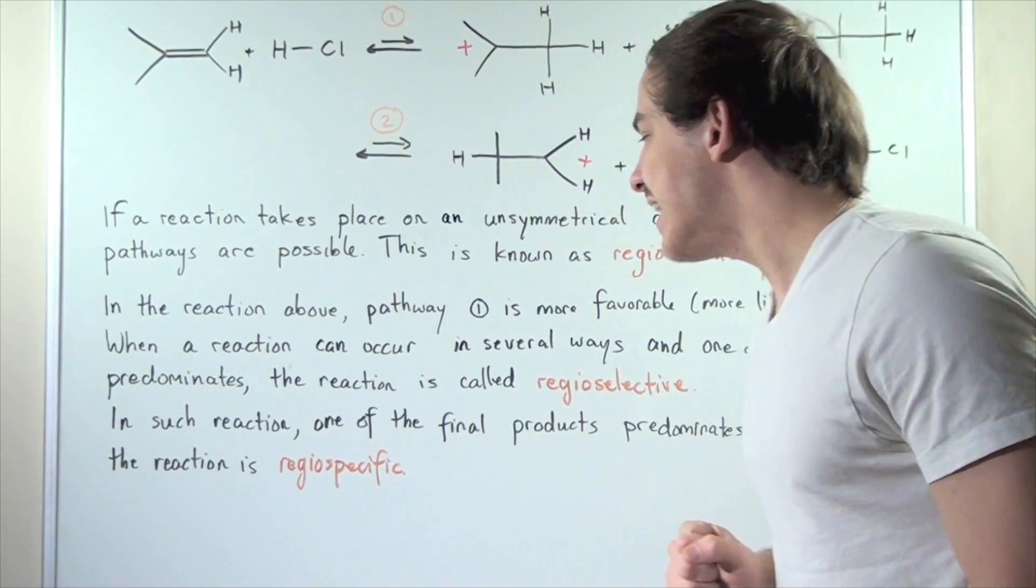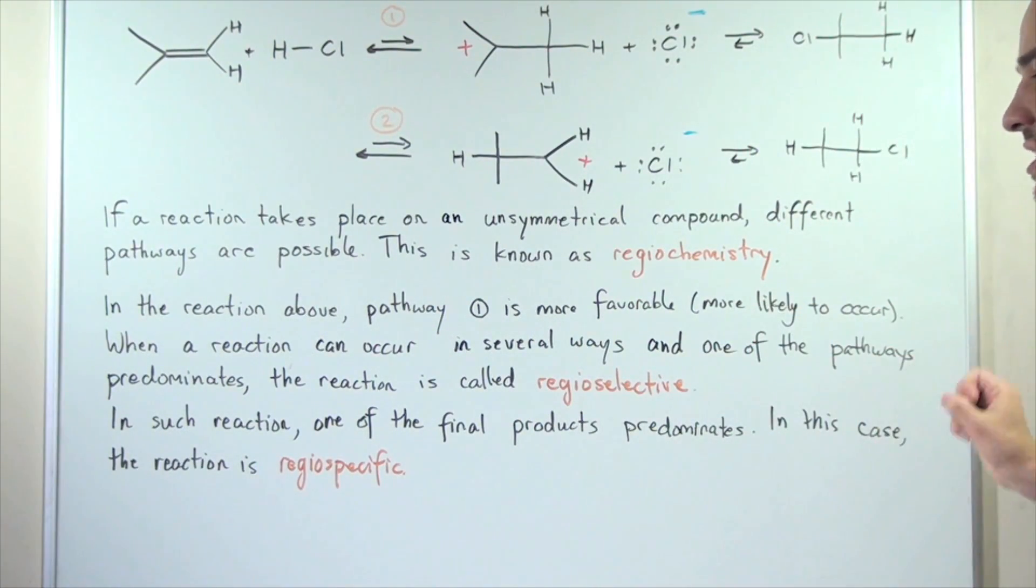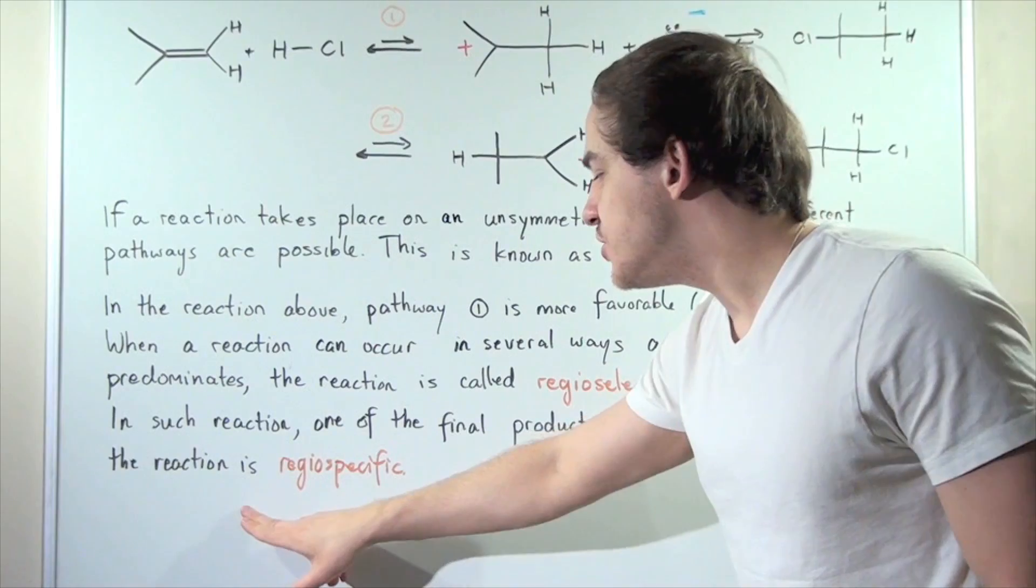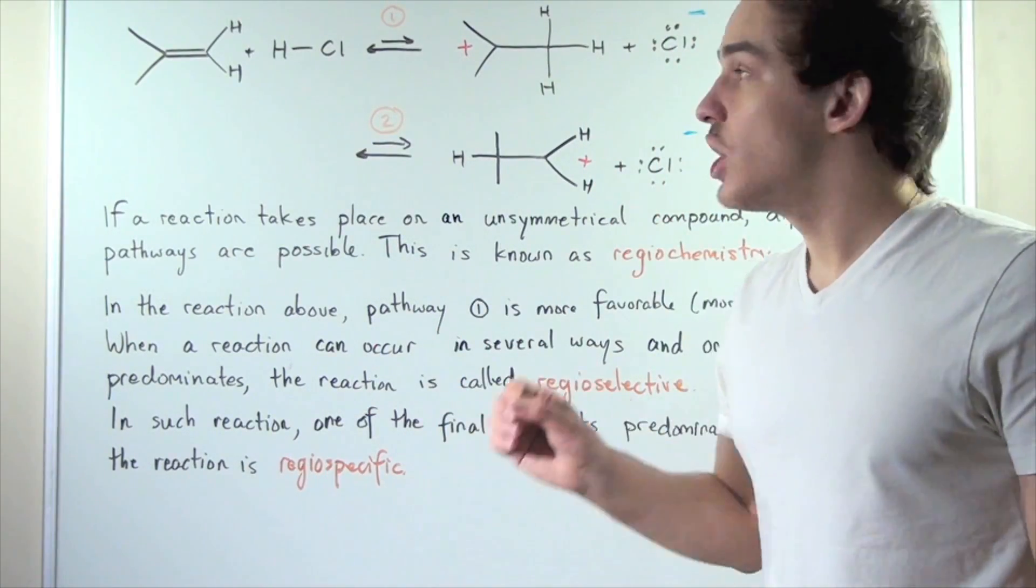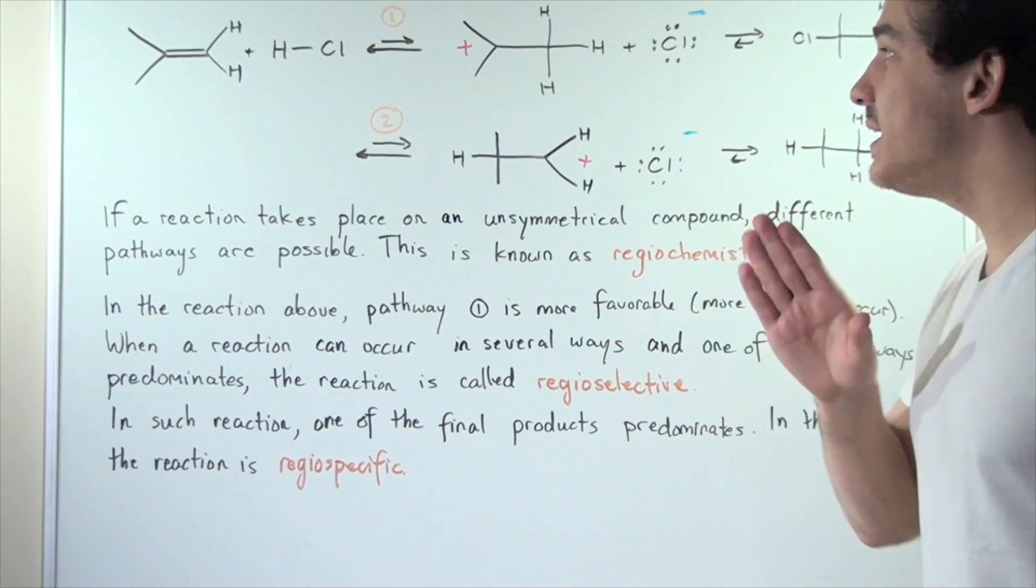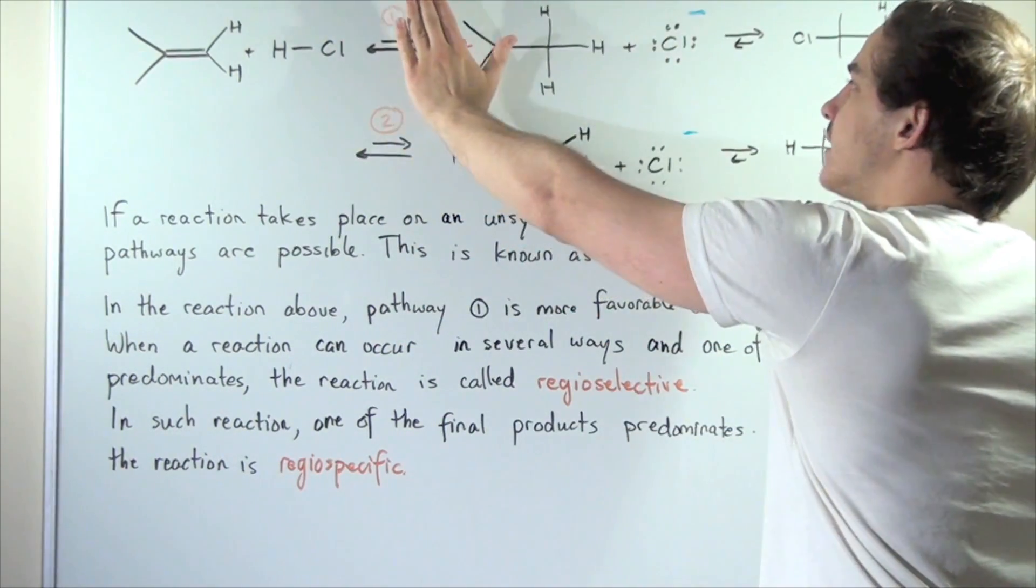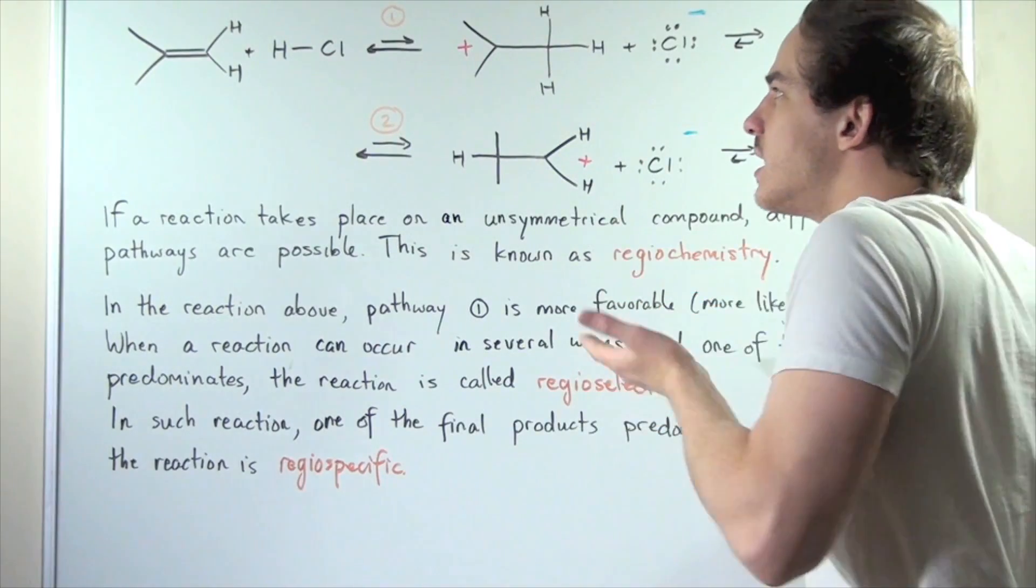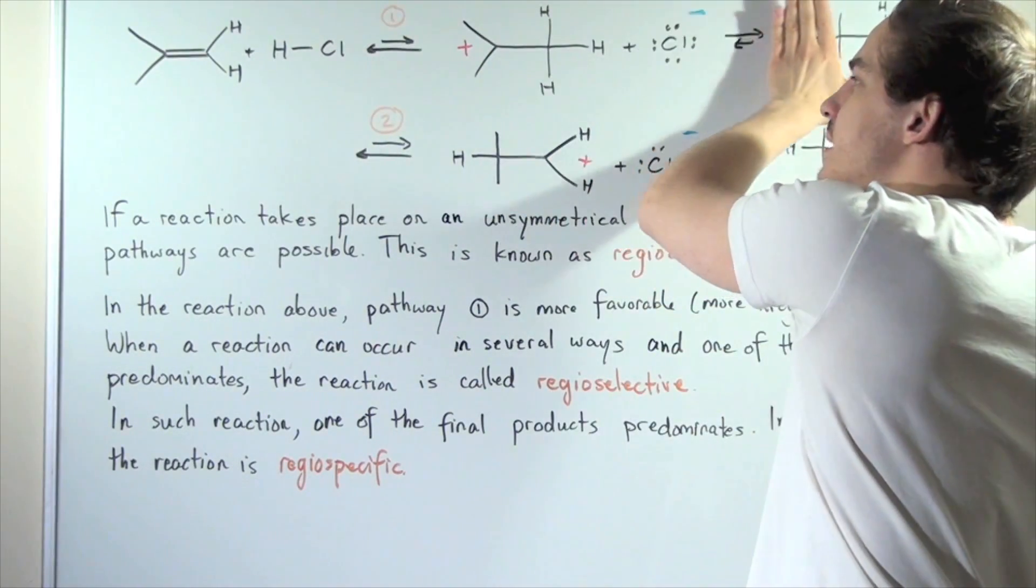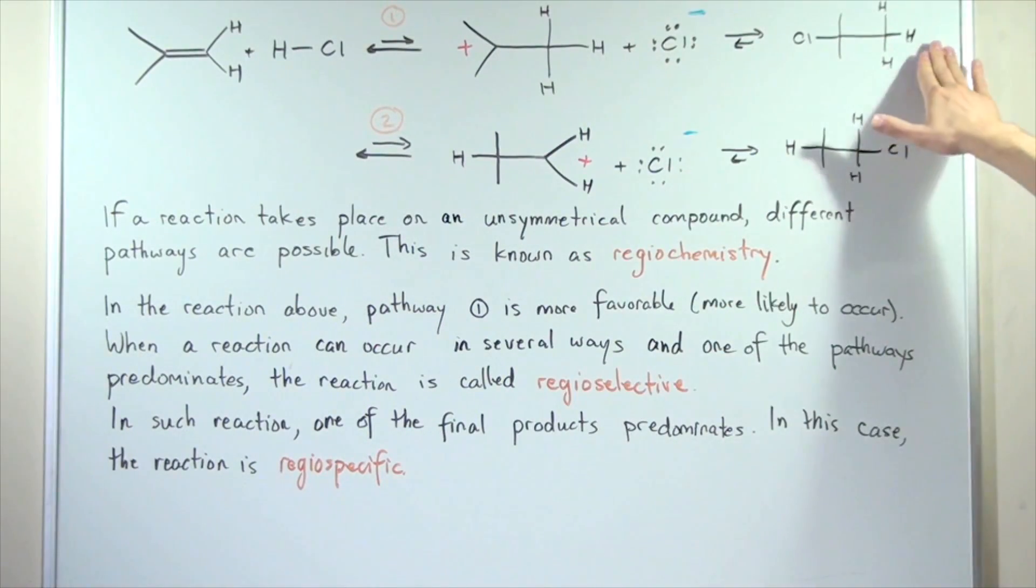In such a reaction, one of the final products predominates, and this is known as a regiospecific reaction. This reaction is regioselective because pathway one predominates - it's more likely to take place. Because pathway one predominates, the product of pathway one will also predominate. So this reaction is also known as regiospecific.